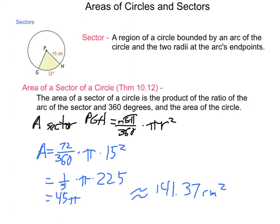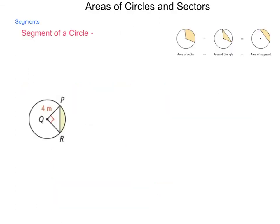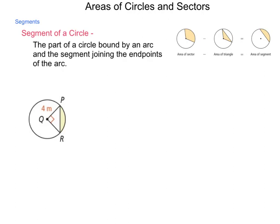Now, when we start working with sectors, there's another concept that also comes up in our study of mathematics, and that is the segment. So, we have areas of circles, areas of sectors. Now, let's take a look at areas of segments. The segment of a circle is defined as the part of a circle bound by an arc and the segment joining the endpoints of the arc.